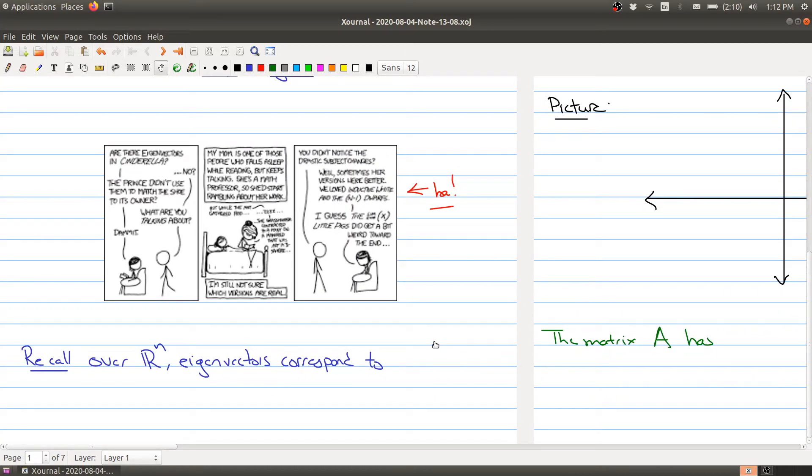When we learned about eigenvectors, one of the ways that we motivated it was that when you're looking over R^n, eigenvectors correspond to stretching a vector. So what we're trying to do today is understand what does it mean when you get a complex eigenvalue? Because in the real case, the stretching or the factor which you stretch it is the eigenvalue. So what does it mean to stretch by a complex eigenvalue?